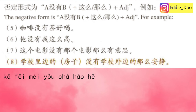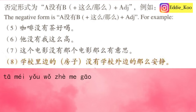Sentence six, 第六句: 他没有我这么高. He is not as tall as me. 他 means he, 没有 means is less than or is not as adjective as, 我 means I or me, 这么 means so, and 高 means tall. So 这么高 means so tall — he is not so tall as me.